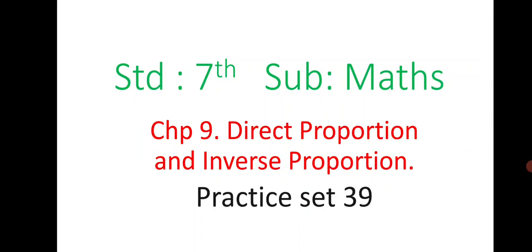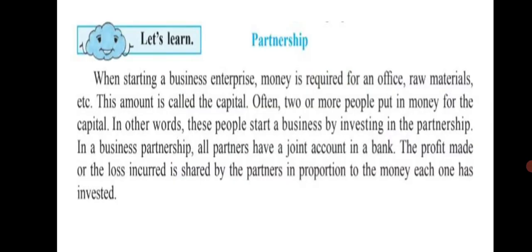Standard 7 Maths, Chapter 9: Direct Proportion and Inverse Proportion, Practice Set 39. In the previous practice set, you solved sums based on direct proportion and inverse proportion. Now in Practice Set 39, let's learn about partnership. When starting a business enterprise, money is required for an office, raw materials, etc. This amount is called the capital. Often two or more people put in money for the capital — these people start a business by investing in partnership.